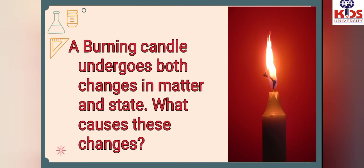In a chemical reaction, we can see a new substance is formed, which is called a chemical reaction. In a chemical reaction, the atoms present in matter are rearranged. In the previous chapter, we read about what atoms and molecules are, so atoms undergo rearrangement in a chemical reaction.